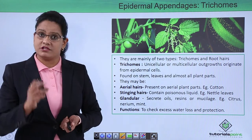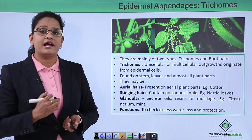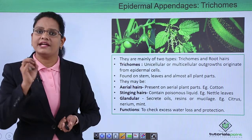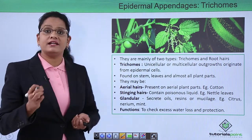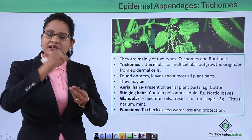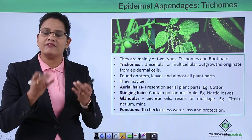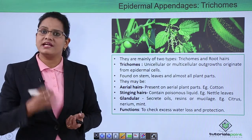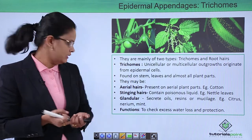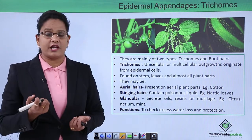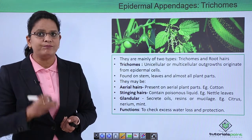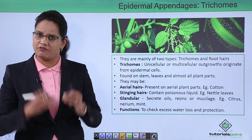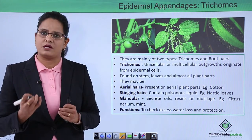Trichomes can be of different types: aerial hair, such as the hairs found on cotton plants; stinging hair, as found on nettle leaves which are poisonous; and glandular trichomes, which secrete liquids such as resin or mucilage. The functions of trichomes are to prevent excess loss of water, provide protection, and carry out secretion — just as hair protects our skin.